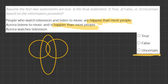But just in case, we're going to take the slower method and go through it. The first statement is: people who watch television and listen to music are happier than most people. So on the left circle, I'm going to do T for television, on the right we'll do M for music, and in the middle one we'll do H, which represents happier than most people.